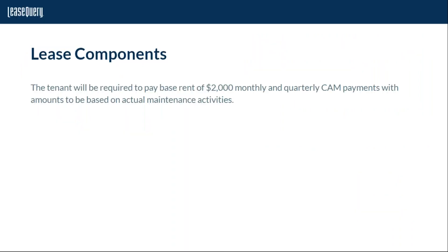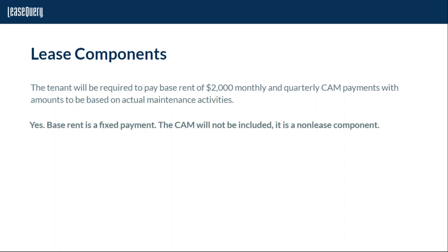Looking at the various payments required by this contract: the tenant is required to pay base rent of $2,000 monthly and quarterly CAM payments with amounts based on actual maintenance activities. The base rent is a fixed payment and will be included in the lease liability calculation. The CAM, however, is not going to be included because it is a non-lease component.